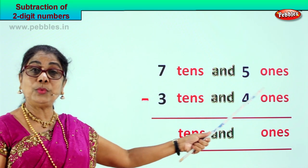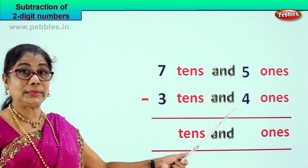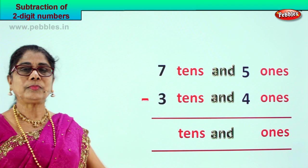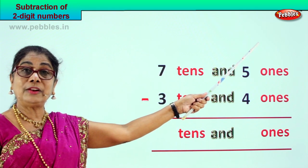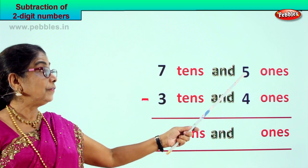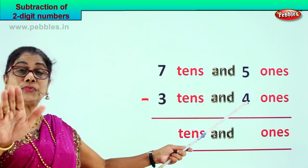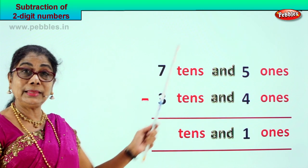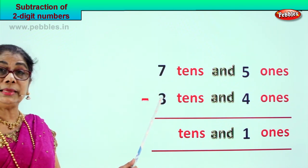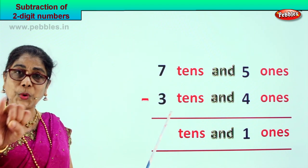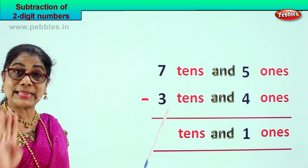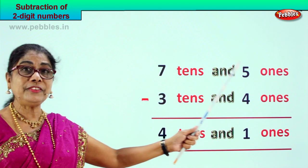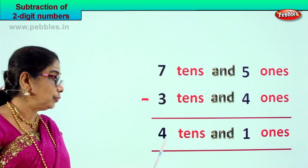7 tens and 5 ones minus 3 tens and 4 ones. 75 minus 34 — what will we get? Let's do the ones first. 5 ones minus 4 ones — 5 minus 4 is 1. 5 take away 4 is 1. 7 minus 3 gives you 4. 7 tens minus 3 tens gives you 4 tens. 75 minus 34 gives you the answer 41.